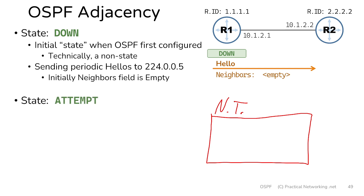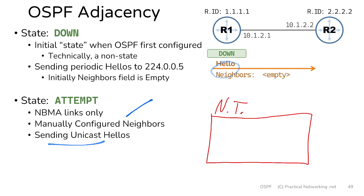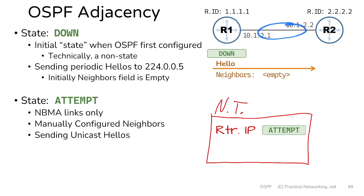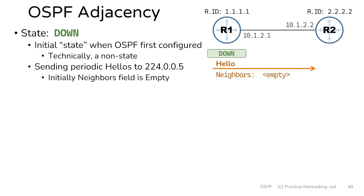Sometimes you'll come across the attempt state. The attempt state is actually pretty rare — you're only going to see it on non-broadcast multi-access links. On those links that don't support multicast packets, you have to manually configure the neighbor's IP address, meaning you have to tell router1 that the IP address of router2 is 10.1.2.2. In those cases, the hello packets are sent unicast to the IP address you manually configured, and you will see an entry in the neighbor table using that IP address with the state set to attempt. For us, we're going to keep it simple and consider that this link does support multicast packets, so we are not going to come across the attempt state. But I did want to provide a definition for what that state means.